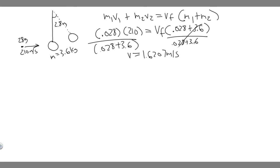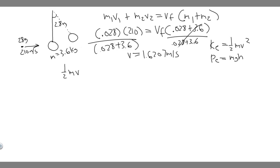Now we know the velocity of the combined object. We're trying to find the maximum height of the swing, so we'll use conservation of energy — kinetic energy plus potential energy. Kinetic energy is ½mv², and potential energy is mgh. Setting initial total energy equal to final total energy: ½mv_i² + mgh_i equals ½mv_f² + mgh_f. Mass appears in every term so it cancels out. The highest point is reached when velocity becomes zero.